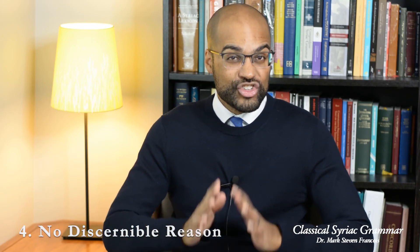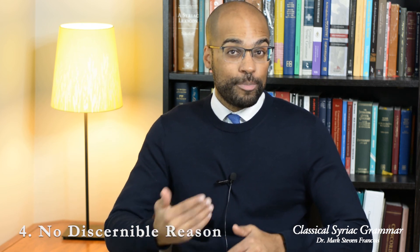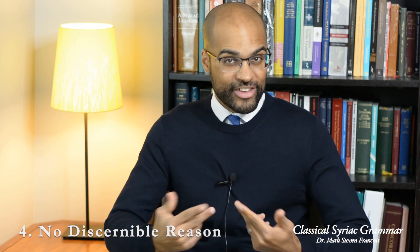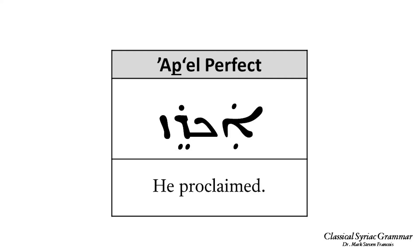Fourth, in some cases there is no discernible reason why a verb should be in the Af'el as opposed to the Pe'al. For example, 'achrez' means 'he proclaimed' and is in the Af'el perfect with no clear reason why. So those are the functions that verbs can have in the Pe'al, Pa'al, and Af'el. In our next video, we'll look at the Af-Pa'al, the Etpa'al, and the Ettaf'al. For more information, check out the free online grammar at www.markfrancois.wordpress.com.